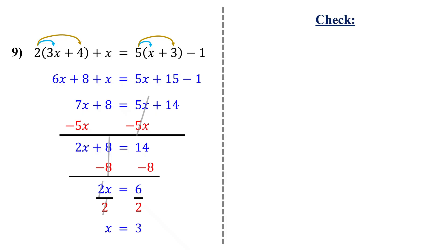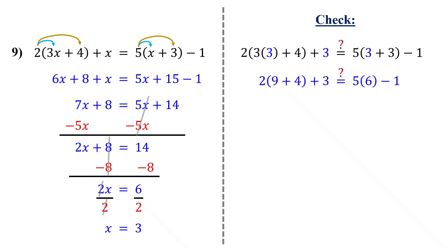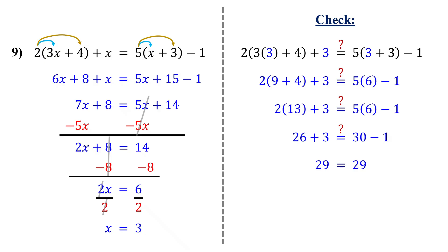To check, plug in 3 into the original equation. First, simplify inside the parentheses on both sides. Then multiply. Next, add and subtract. It checks out.